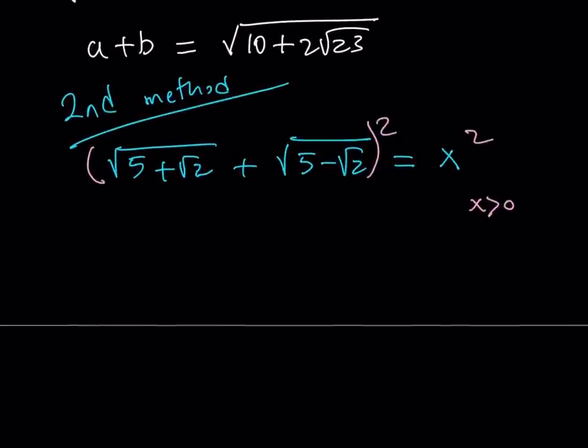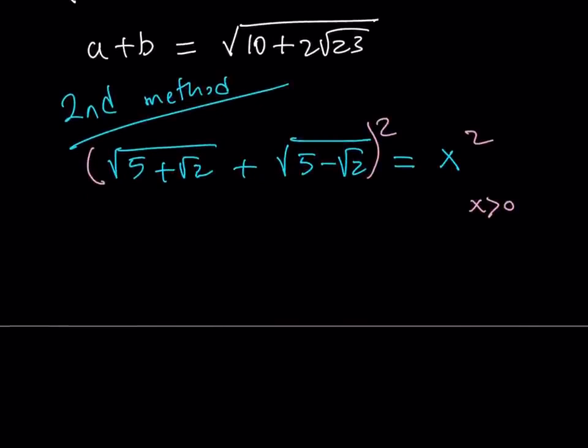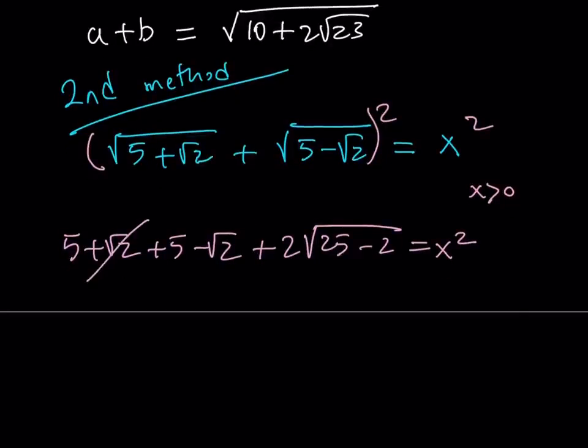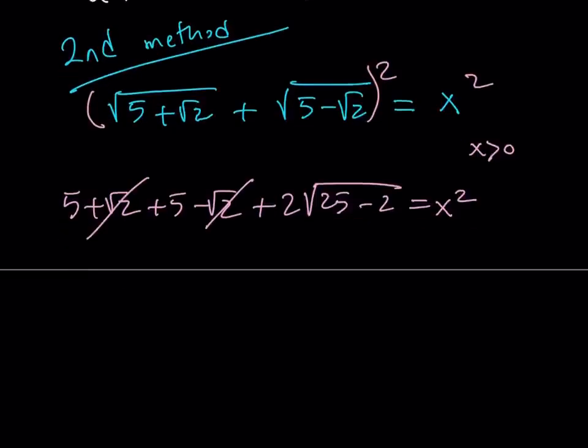So, when we square both sides, we get the following. Again, from the formula, a plus b quantity squared. We're going to get a squared plus b squared plus 2ab, which is 2 times the square root of 25 minus 2. So, this method is somewhat similar to the first one. Hopefully, you've seen the relationship. But, it's a little different. It's more direct. Square root of 2 cancels out, and we end up with x squared equals 10 plus 2 root 23, just like before.